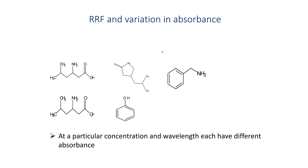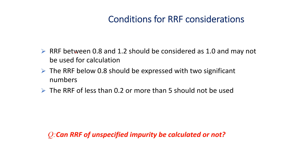RRF and variation in absorbance: in cases where there is a huge difference in RRF, at a particular concentration and wavelength, each compound has a different absorbance. Conditions for RRF consideration: RRF between 0.8 and 1.2 should be considered as 1 and may not be used for calculation. RRF below 0.8 should be expressed with two significant numbers. An RRF of less than 0.2 or more than 5 should not be used.